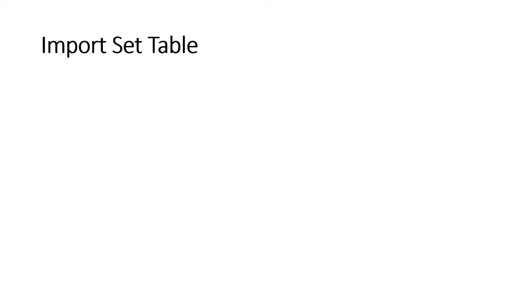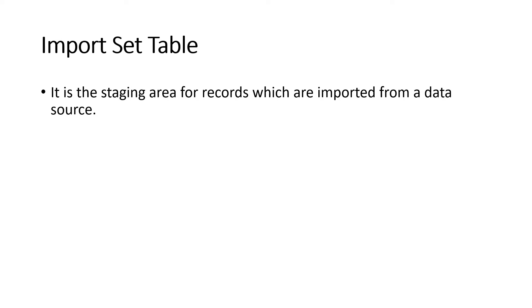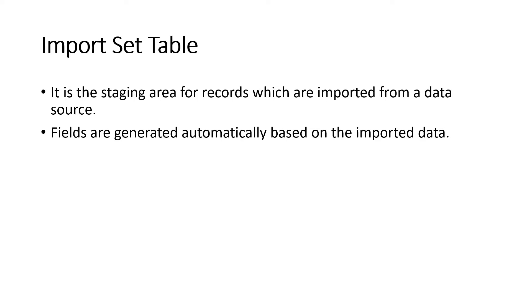There are reasons the data doesn't go directly to the target — for example, your data may contain different fields that are not present in the user table. So ServiceNow first stores your data in the import set staging table. The fields are automatically generated from the imported data — whatever fields you have in your Excel or JDBC source are automatically generated in the import set table.